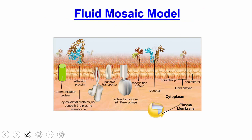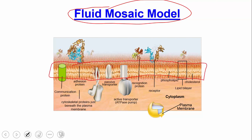Before discussing passive and active transport, we need to acknowledge that the membrane is not just a lipid bilayer — it's described by the fluid mosaic model. Like a mosaic painting made of puzzle pieces, a cell membrane has many components: the lipid bilayer as the main portion, plus proteins, carbohydrates, and other factors. Some of these components, particularly the proteins, affect the transport of molecules across the membrane.